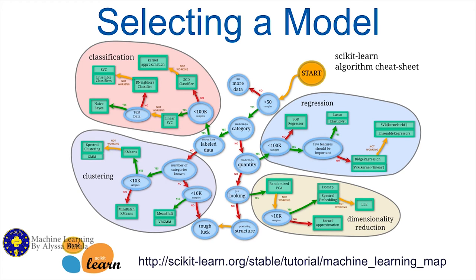As far as selecting a model goes, there are charts to help you figure out what to do. Scikit-learn has one — it's an amazing machine learning Python library. It will just walk you through: do you have enough data, are you trying to predict a category, are you trying to predict a quantity? It can help you figure out where you might want to start with picking a model for your data.